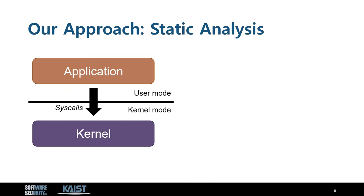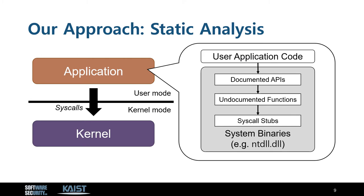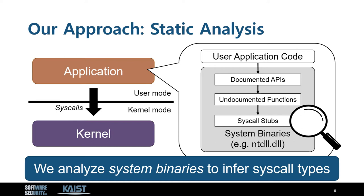Let's take a closer look at how user-level code interacts with the kernel. Normally, user applications do not invoke system calls directly. Instead, they call documented API functions provided in the system libraries. Then the API function passes through a chain of internal functions and reaches the final functions where a syscall is actually invoked. Our key idea is to analyze this function call chain. By tracing data flows from the documented APIs to undocumented syscalls, we can figure out which values are passed as syscall arguments and what they look like. In other words, we can infer the types of syscall arguments by statically analyzing system library files. We call these library files system binaries. Our approach can target a broad range of syscalls, and the static analysis process is automatic and does not require manual effort.